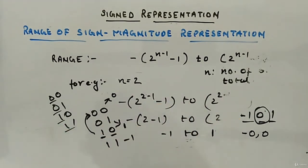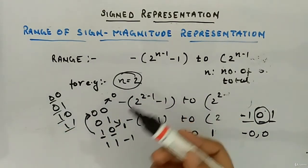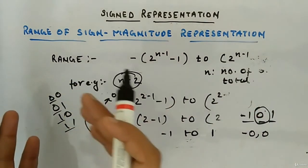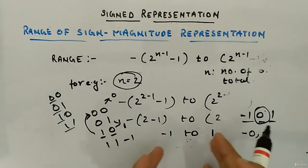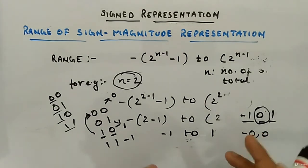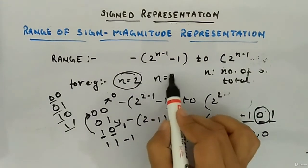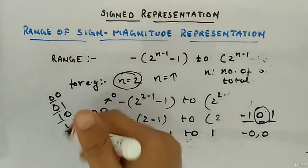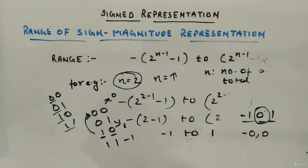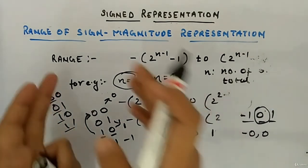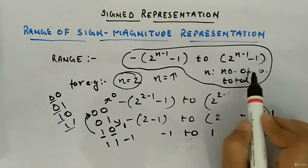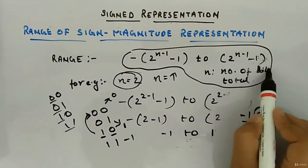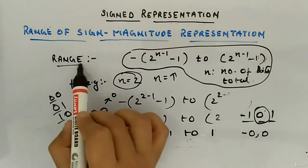From this simple example you can see that there are negative numbers on the left side of 0 and positive numbers on the right side, and together they make up the whole range. When the value of n increases, it becomes more complicated to list all possibilities. But from this example, you can see that the combined range is 2 to the power n minus 1 total representable values. That's the range for sign-magnitude representation.